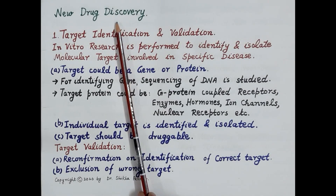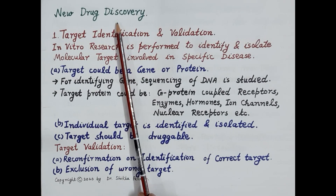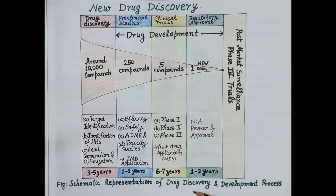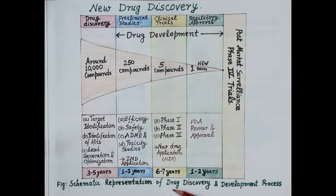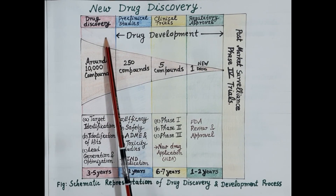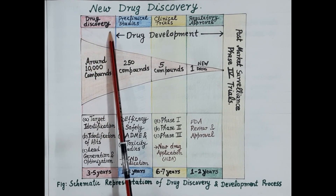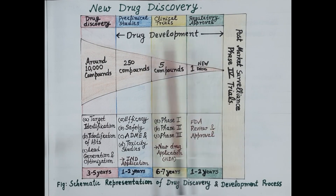Hello students, in today's video we are going to discuss the topic of new drug discovery. This is the second video in the series on new drug discovery and development. Introducing a new drug in the market is a highly complex process — it costs pharmaceutical companies around 1.5 billion US dollars and 10 to 15 years of research and development. The entire process has two main stages: drug discovery and drug development.